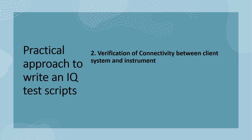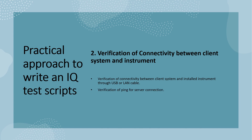The second test script is for the verification of connectivity between the client system and instrument — that is, checking the connectivity between software and hardware. We need to verify the connectivity between the client system and installed instrument through USB port or LAN cable. Next is verification of ping for server connection — we need to ping the command with the IP address to verify the connectivity.